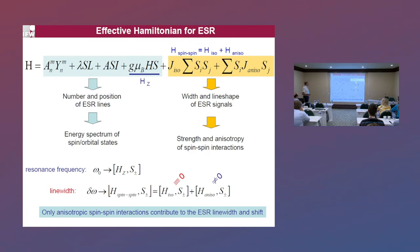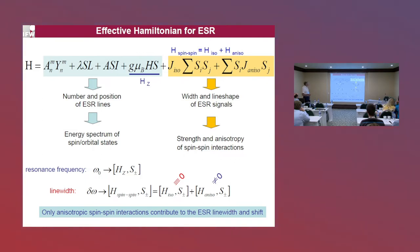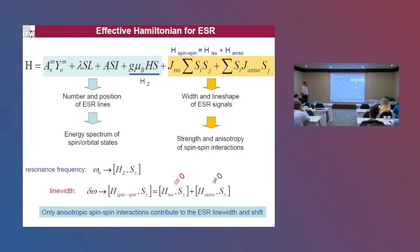This brings me to electron spin resonance spectroscopy, because it turns out this method is very sensitive to exactly this kind of anisotropy. The general effective Hamiltonian used in ESR spectroscopy shows that the ESR response is sensitive to many kinds of interactions: crystal field, spin-orbit coupling, interaction of electron spins with nuclear spins, Zeeman coupling, and terms of the Heisenberg exchange and anisotropic exchange. Very importantly, the ESR response is particularly sensitive to anisotropies, because these give rise to a finite width of the ESR signal and a shift of the resonance position.